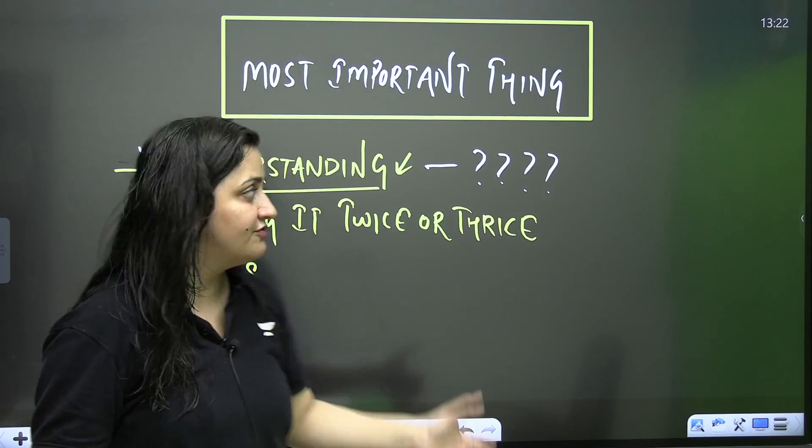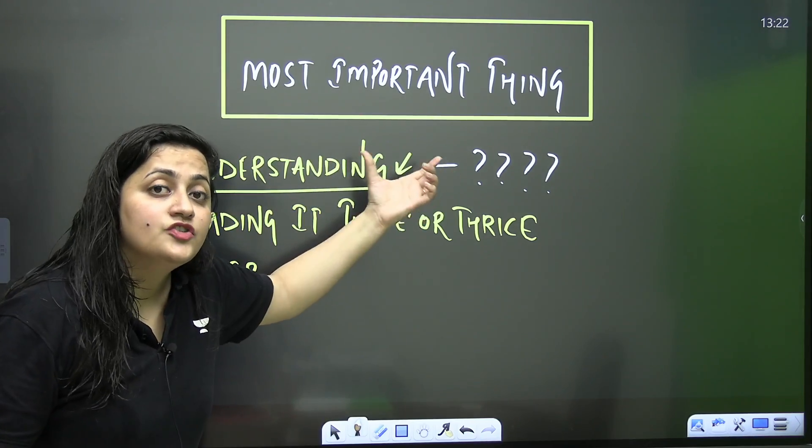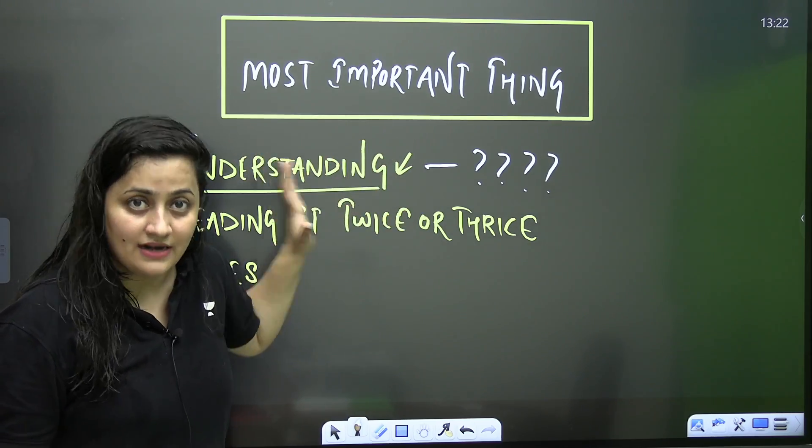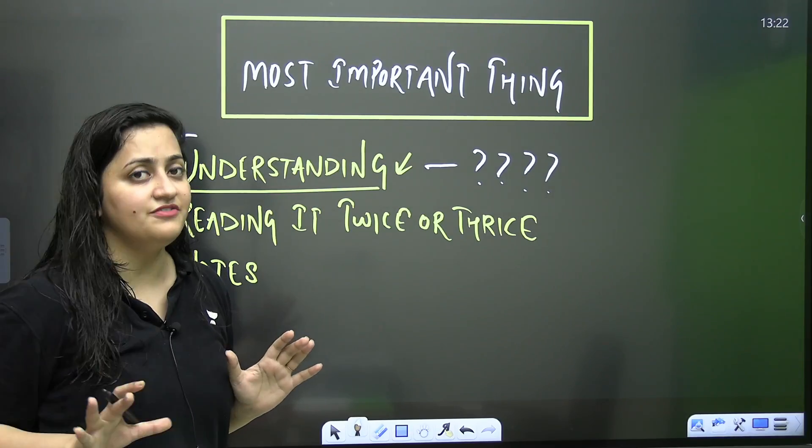So, the first thing that you have to do is, you need to start understanding the chapters, your topics, mainly these two books, having 38 chapters. This is the first step.